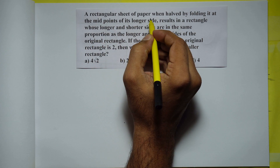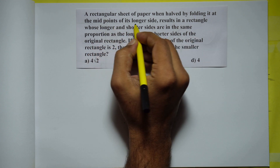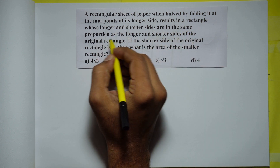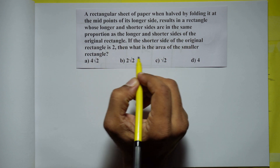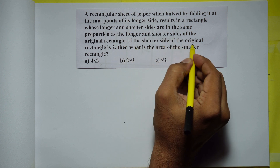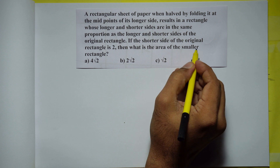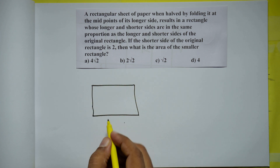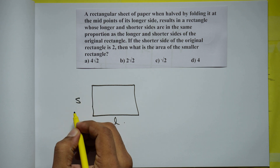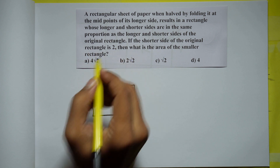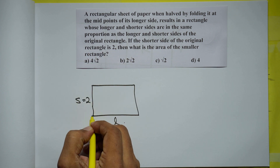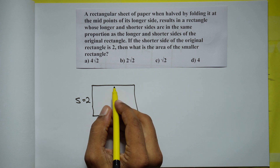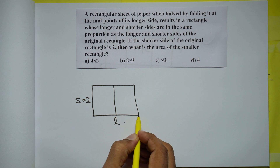A rectangular sheet of paper, when halved by folding it at the midpoints of its longer side, results in a rectangle whose longer and shorter sides are in the same proportion as the longer and shorter sides of the original rectangle. If the shorter side of the original rectangle is 2, what is the area of the smaller rectangle? After folding, the longer side becomes L/2 and the shorter side remains S.